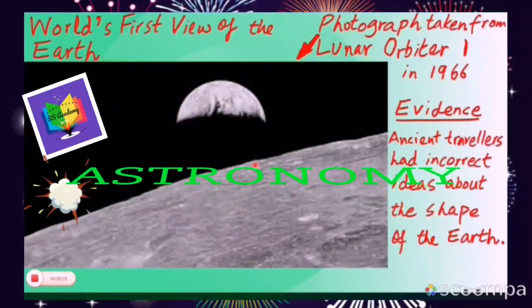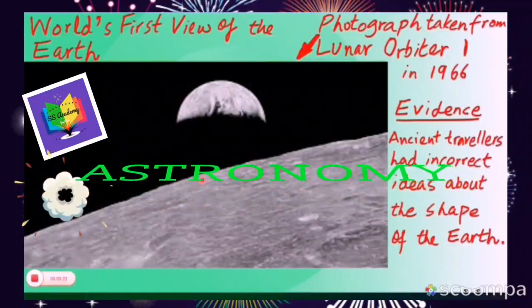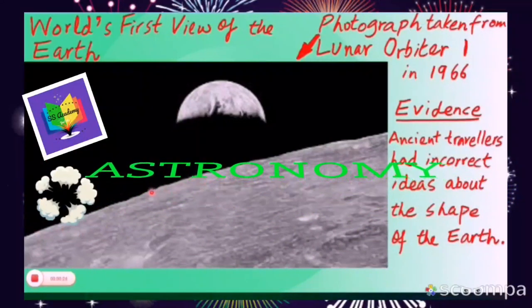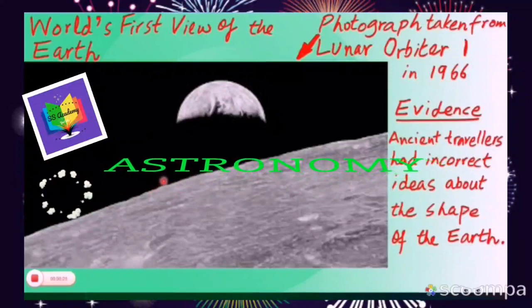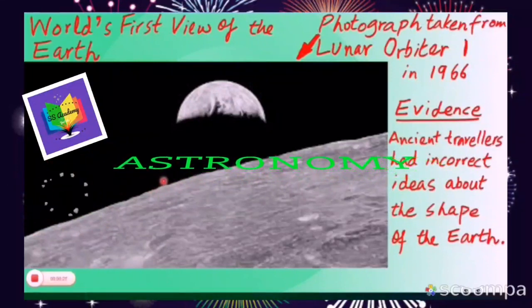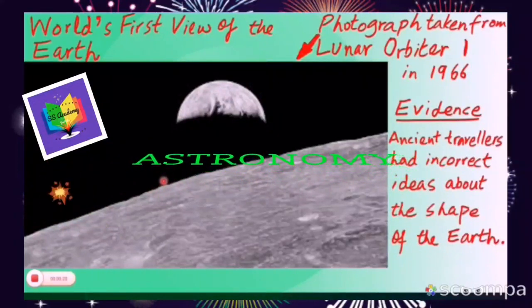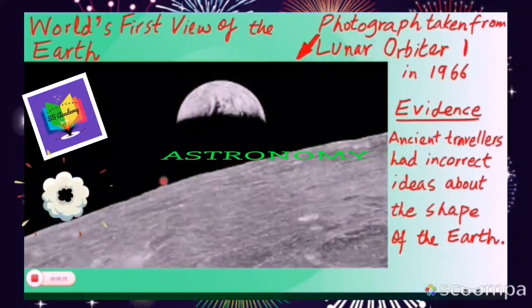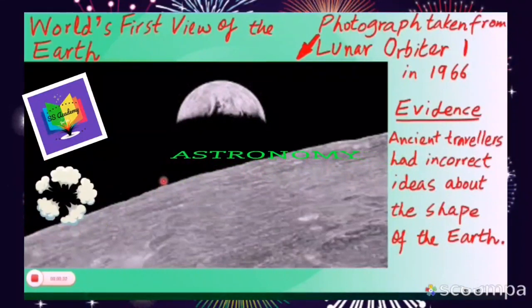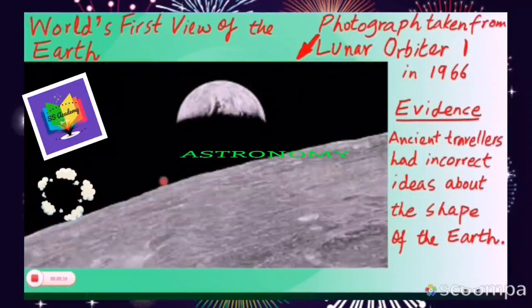Our explanation of the behavior of astronomical bodies is based upon the evidence we have before us today. Our present day ideas and model may change in future and new evidence may be found.